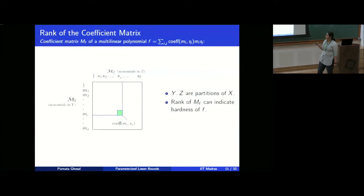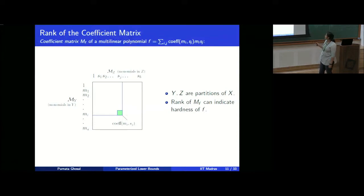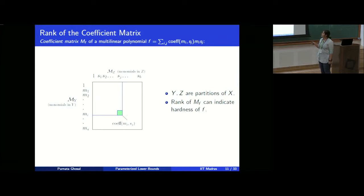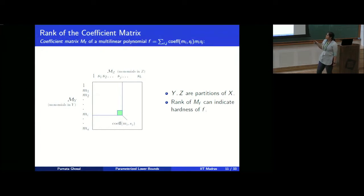We get a lower bound for s which is the measure for P divided by the maximum measure over any of the P_i's. In our case, the measure considered is the rank of the coefficient matrix. We consider any multilinear polynomial f and divide its variable set x into two parts y and z. Any monomial in f will be a product of a monomial whose support is in y and a monomial whose support is in z. We construct the matrix such that columns are indexed by monomials in z and rows by monomials in y, and the entry corresponding to m_i and s_j is the coefficient of the monomial m_i·s_j in f. The rank of this matrix is the measure of hardness we use.